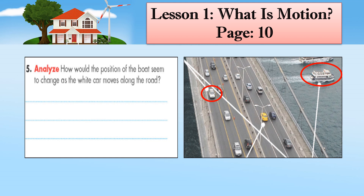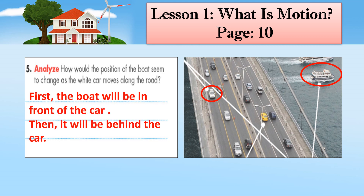Now please look at the picture and let's try to find the answer for question number 5, page 10. How would the position of the boat seem to change as the white car moves along the road? Your answer: first, the boat will be in front of the car, then it will be behind the car.